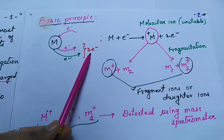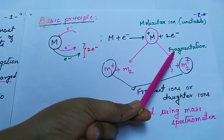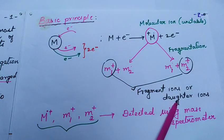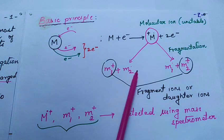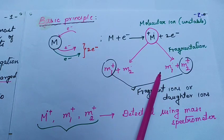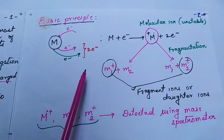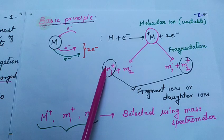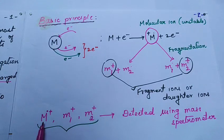The molecular ion formed is unstable and undergoes fragmentation to give daughter ions. Along with the daughter ions M1+ and M2+, there is formation of free radicals also, represented using the dot sign. These free radicals as well as neutral molecules are not identified using a mass spectrometer. Only the molecular ion and the daughter ions are detected in the mass spectrometer.